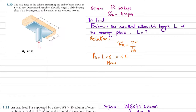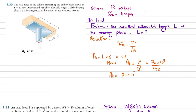A_b equals P divided by bearing stress. P is 20 kips, so 20 × 10³ divided by bearing stress of 400 psi equals A_b. Since A_b = 6l, we get 6l = 20 × 10³ divided by 400.